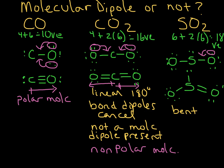Now let's think about the dipoles in sulfur dioxide. Looking at the bond dipoles: oxygen is more electronegative than sulfur, so there's a bond dipole pointing toward each oxygen. Notice that both of them are pointing in an overall downward direction. These bond dipoles do not cancel out. They're both pointing down toward the oxygens, and so sulfur dioxide is a polar molecule.